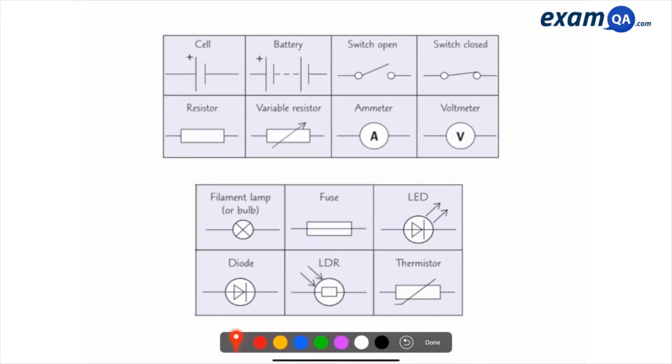So again, cell, battery, switch. When it's like this, it's open. Otherwise, it'll be closed. So here, no current flows. So the whole thing turns off. But here, current can flow. You've got a standard resistor. And of course, you've got other ones as well. So look at all of these. Pause the video. Make sure you can memorize them.